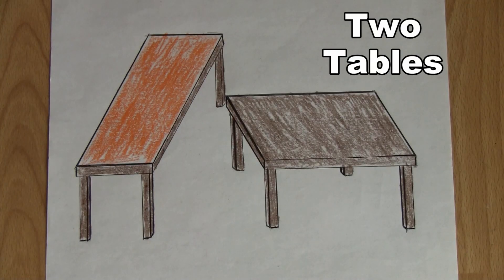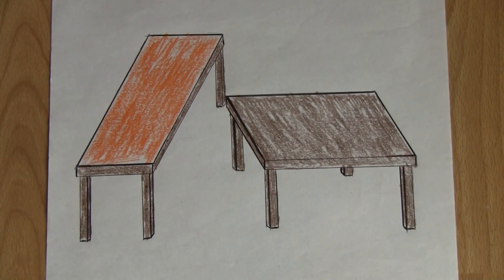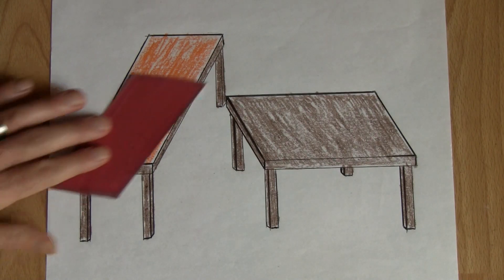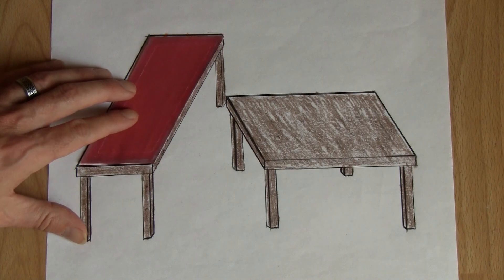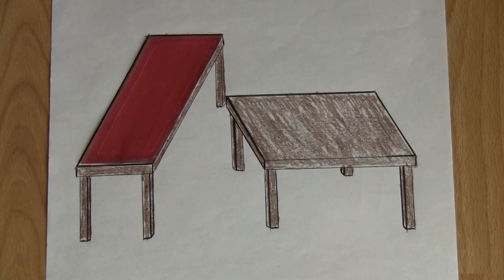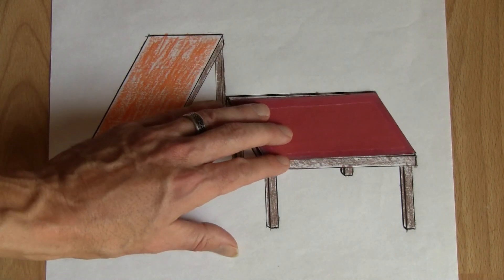These two tabletops are exactly the same size. The one on the left looks long and thin, while personally I think the one on the right looks short and wide. To prove that they are exactly the same size, I cut out this parallelogram that matches both of the tables identically.